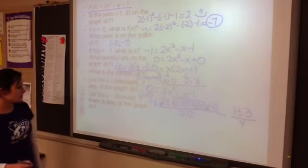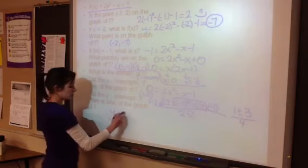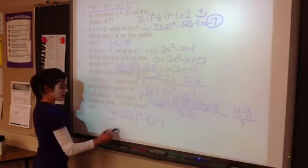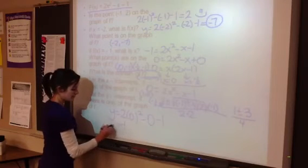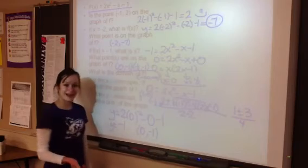The y-intercept, if there is one, we're going to plug in 0 for x. So y equals 2 times 0² minus 0 minus 1, and you get -1. So our ordered pair is (0, -1). Yay!